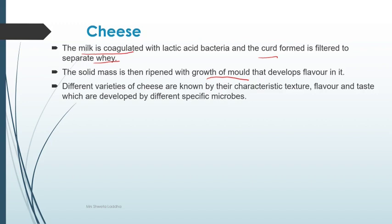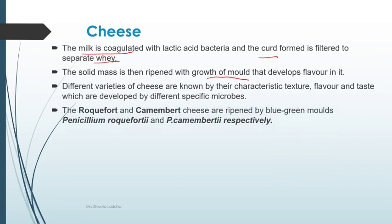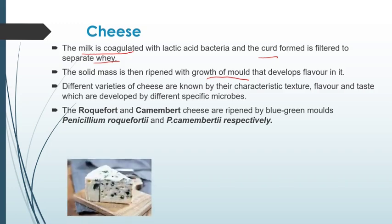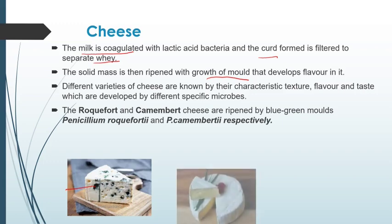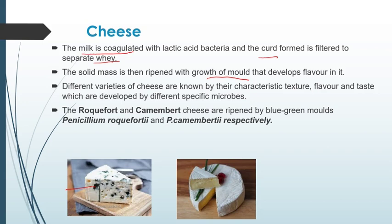Roquefort and Camembert cheese are ripened by blue-green molds — specifically Penicillium roquefortii and Penicillium camembertii respectively. This picture is of Roquefort cheese, and you can see the blue-green mold present on it. This mold is Penicillium roquefortii. The other picture shows Camembert cheese, which is prepared by growing the blue-green mold Penicillium camembertii.